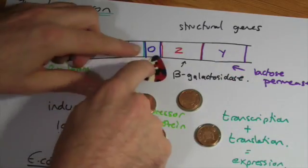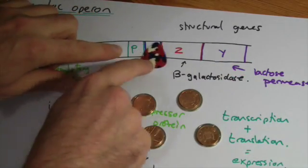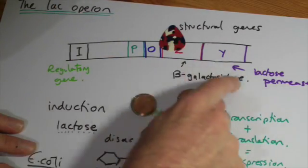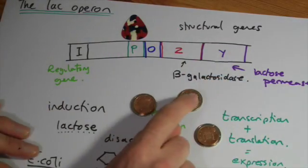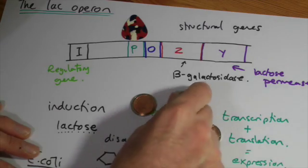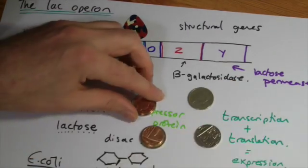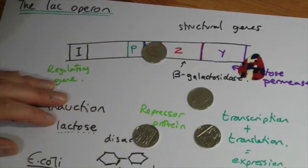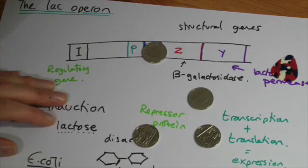Now, the operator region's released, RNA polymerase rolls along. Now, this enzyme, remember, breaks down the lactose. So eventually, we're going to start breaking this lactose down, and any more free lactose in the cell. And at that point, the repressor protein will bind back again, and we've switched our gene off.